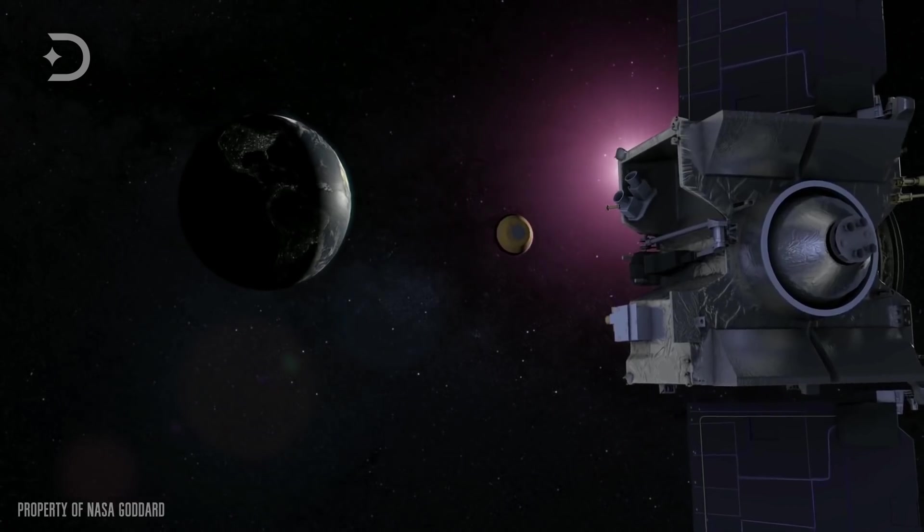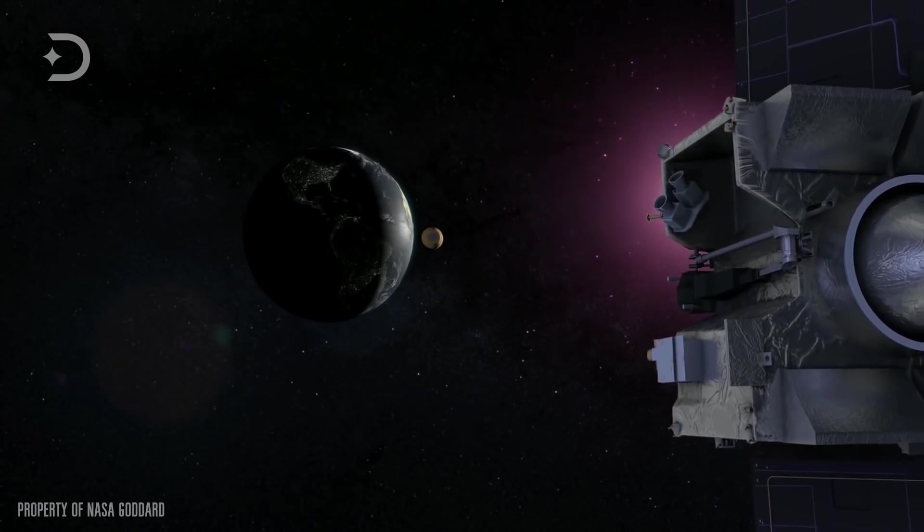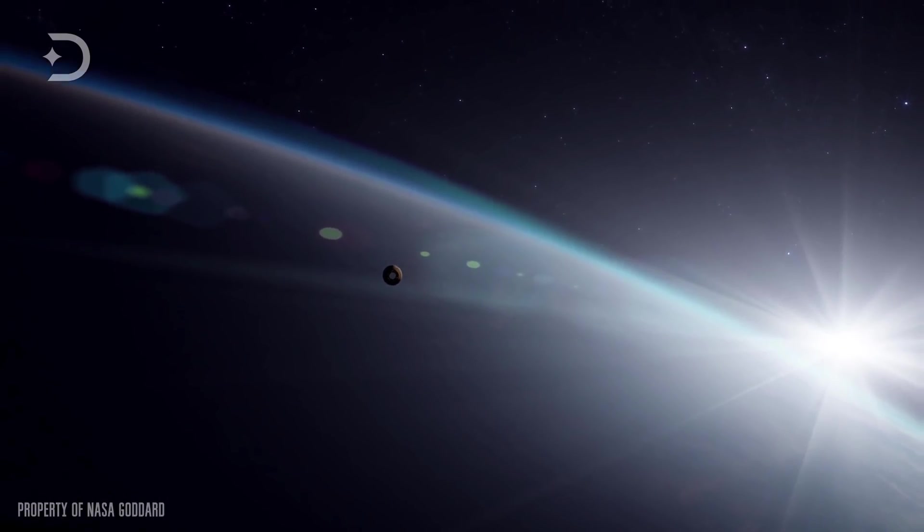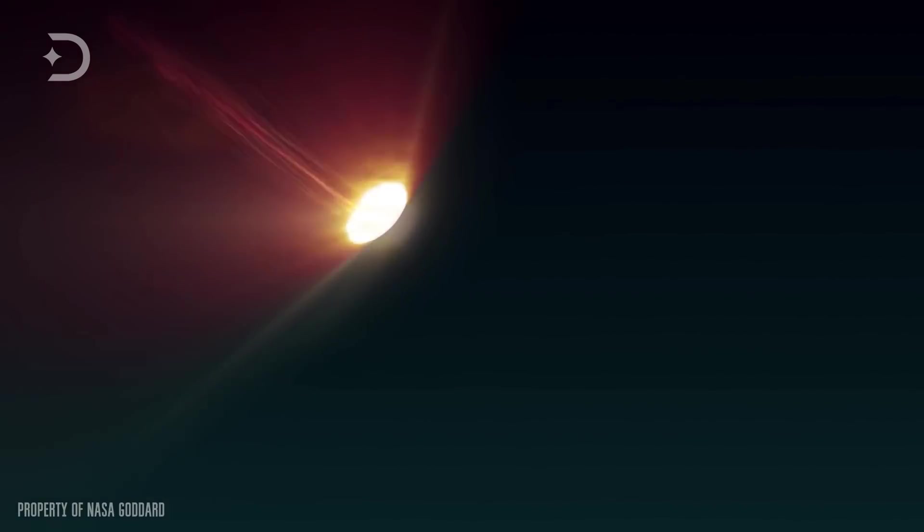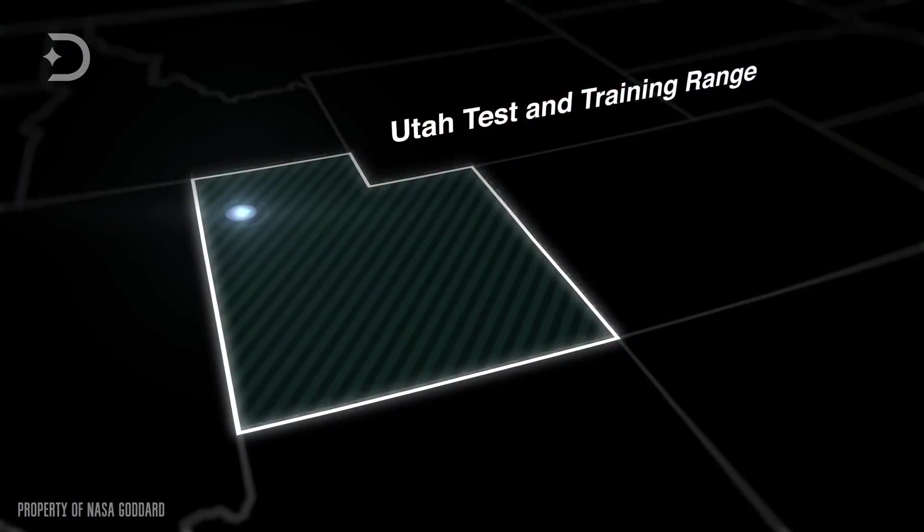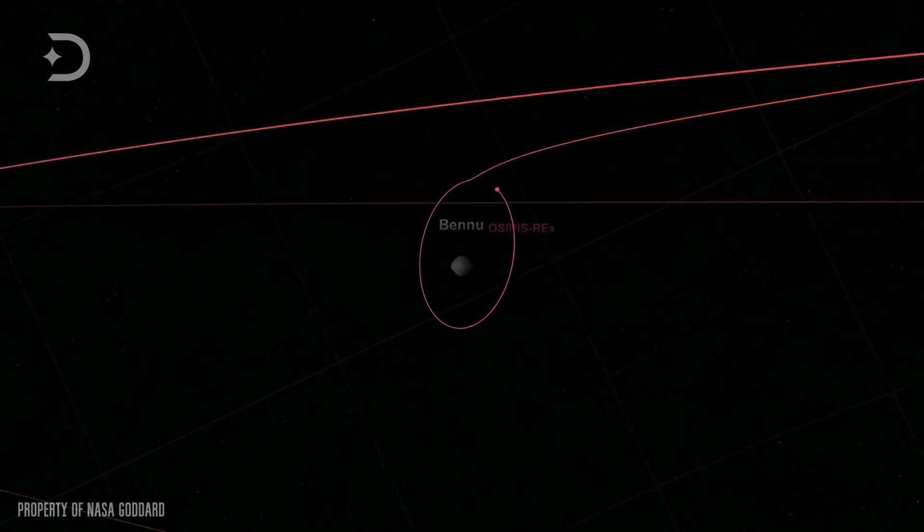But if successful, and once the spacecraft has the sample, a separate container will break away and head back to Earth, where it will parachute down in Utah in the year 2023. From there, it will head to the Johnson Space Center for processing in a dedicated research facility.